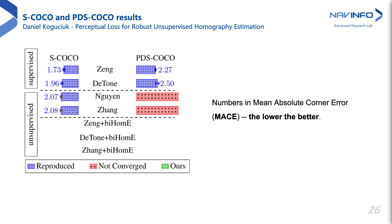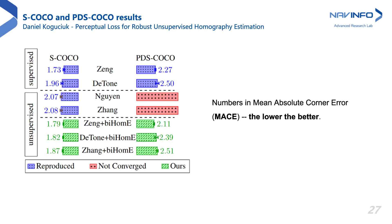Current unsupervised approaches give slightly worse performance compared to supervised methods on S-COCO. However, when both illumination and viewpoint changes are introduced, no unsupervised method can converge. Our pi-HOMI achieves comparable or better homography estimation performance than supervised methods on both S-COCO and PDS-COCO for any of the tested backbones.